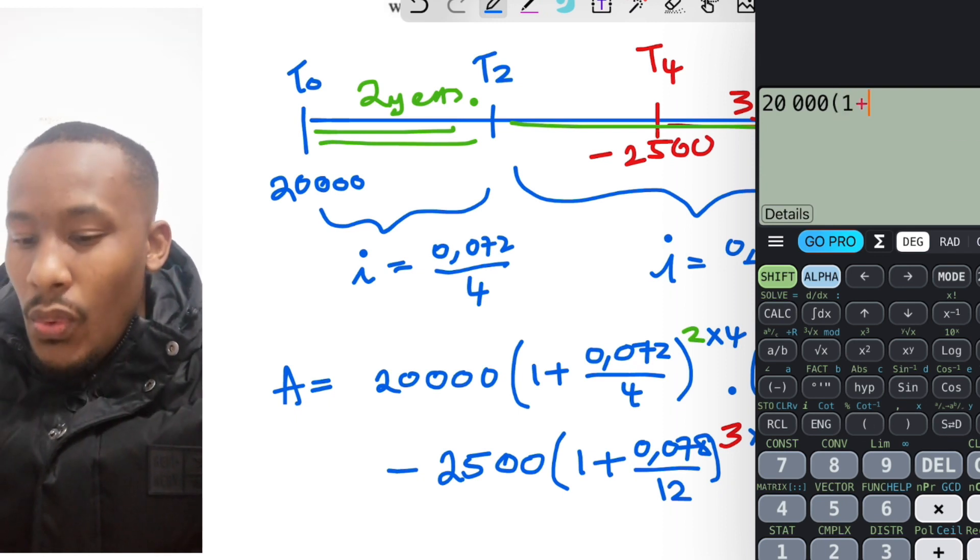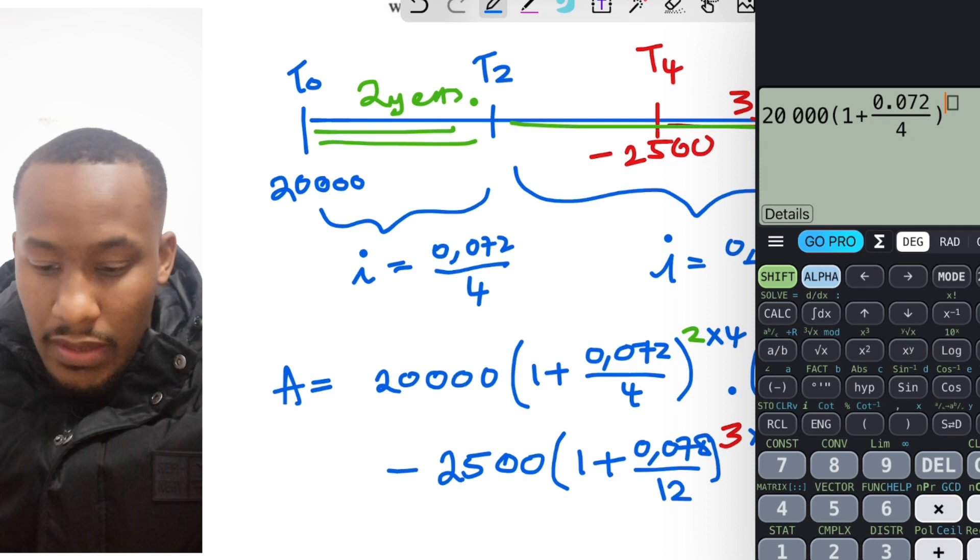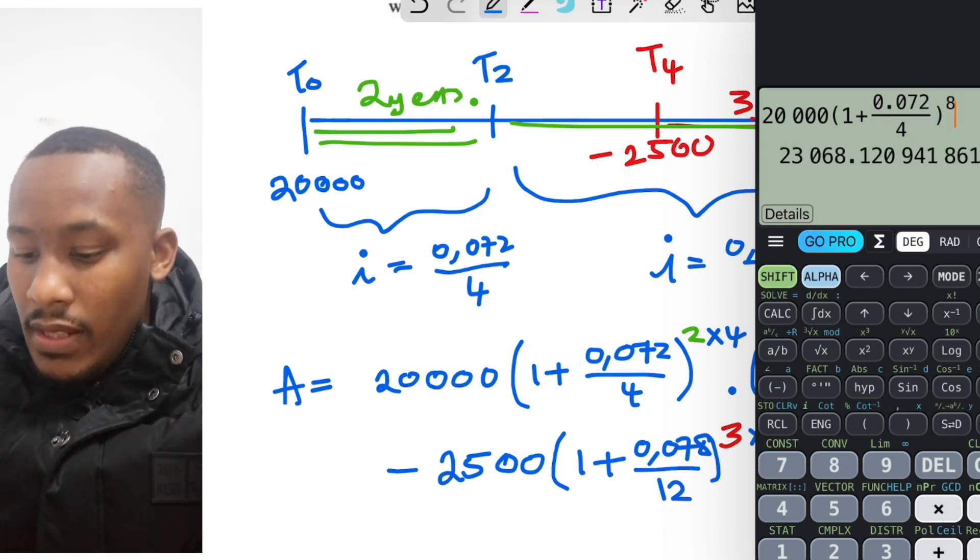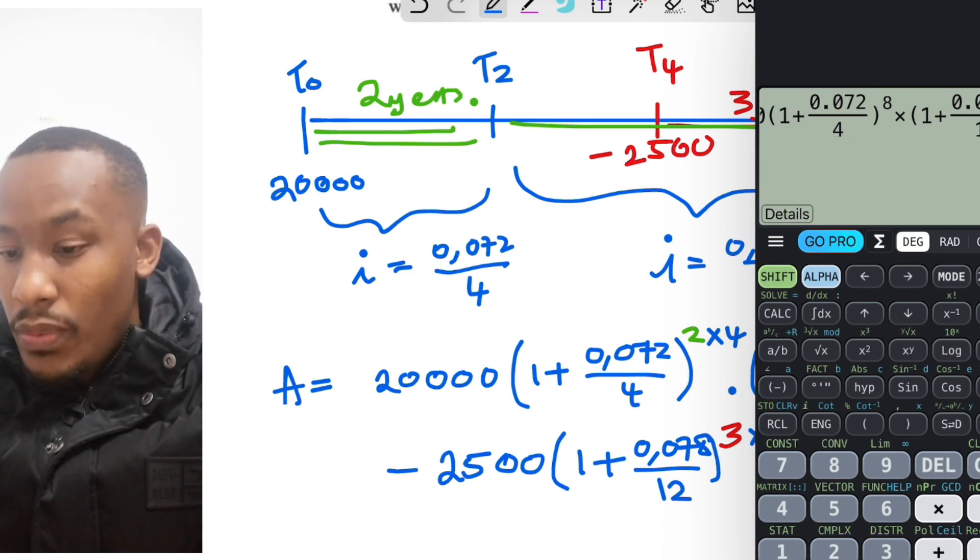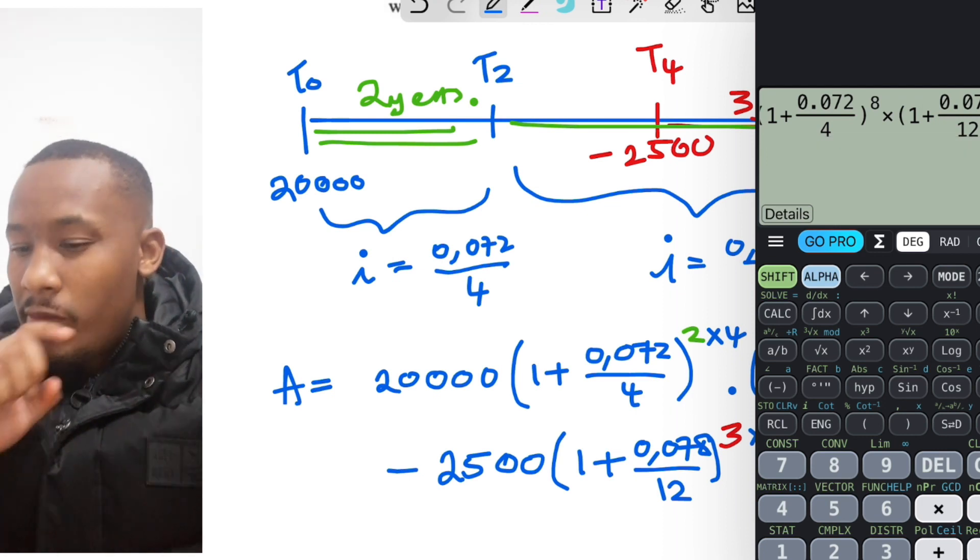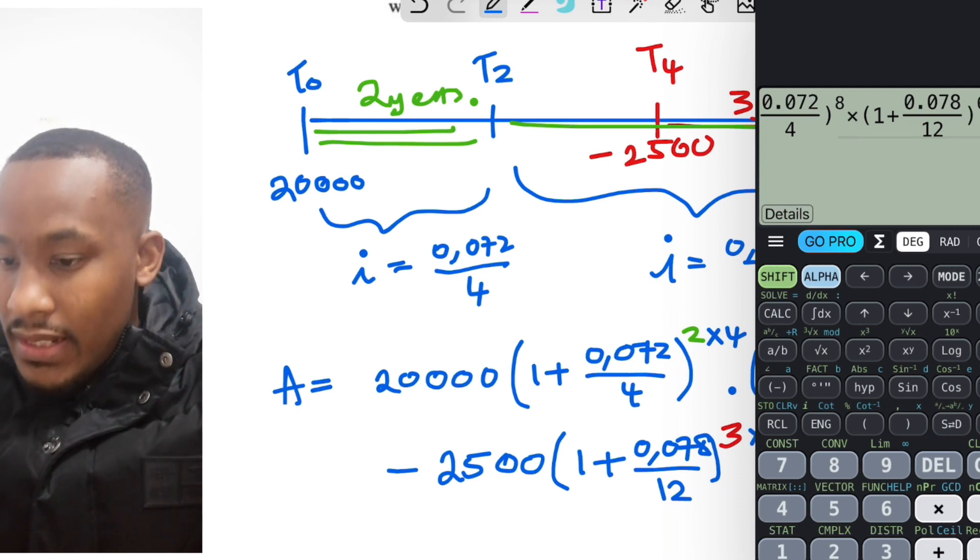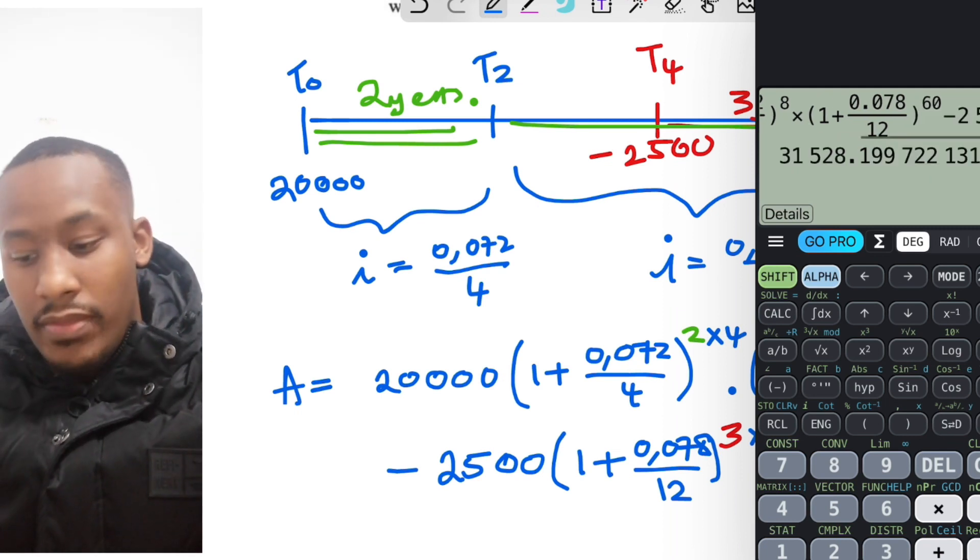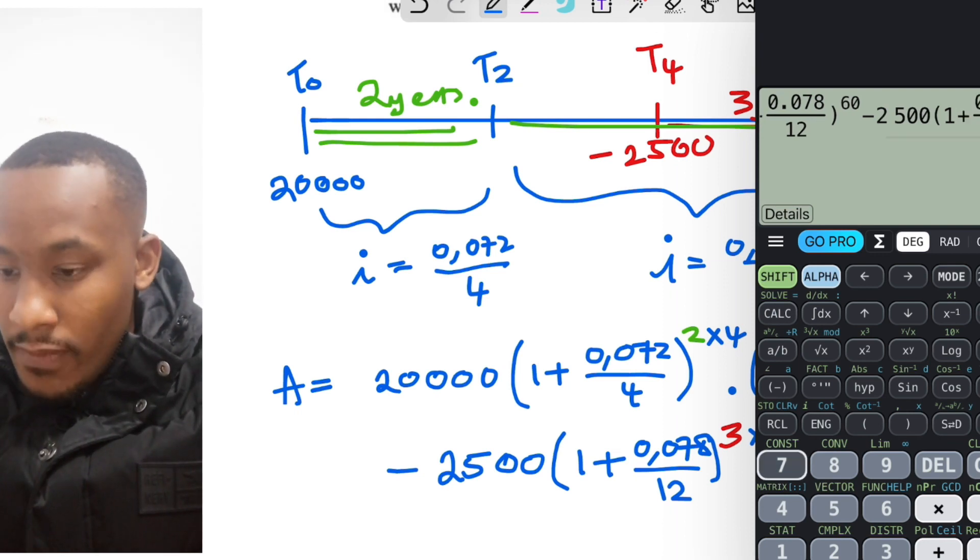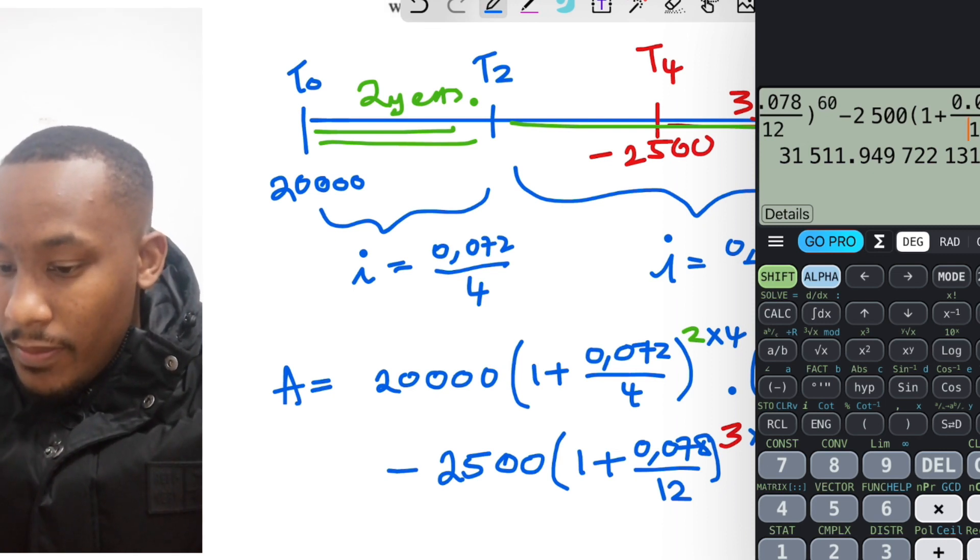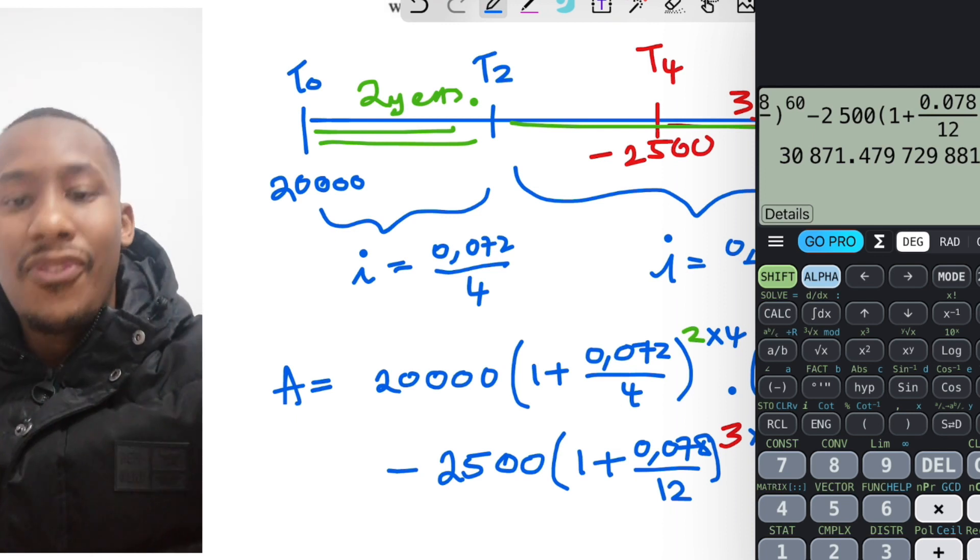20,000 times 1 plus our first interest rate 0.072 divided by 4 to the power of 8. I'm just going to say 2 times 4 is 8. This is going to be multiplied by our second interest rate, which was 1 plus 0.078 divided by 12 to the power of 5 times 12, so that's 60. And then we're going to subtract 2,500, that was the withdrawal, and all the interest rate this withdrawal, had it not been made, would have generated. So it's a lot of money that we are subtracting here, 1 plus 0.078 divided by 12 to the power of 3 times 12, so that's 36.